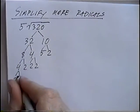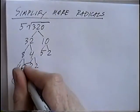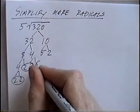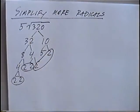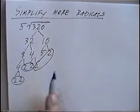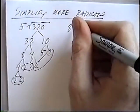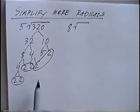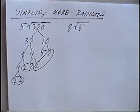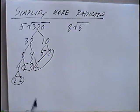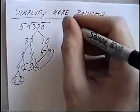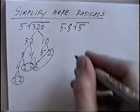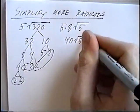You want to circle the pairs — only 2 at a time. We have one set of 2s, another set of 2s, and a third set of 2s. If you have more than one set, you can multiply those numbers together: 2 times 2 is 4, times 2 more is 8 — that's the number outside the radical. Inside the radical is the number we did not circle, which in this case is 5. So we'd have 8 radical 5. But keep in mind our beginning number had a 5 out front, so bringing that 5 over: 5 times 8 gives a final answer of 40 radical 5.